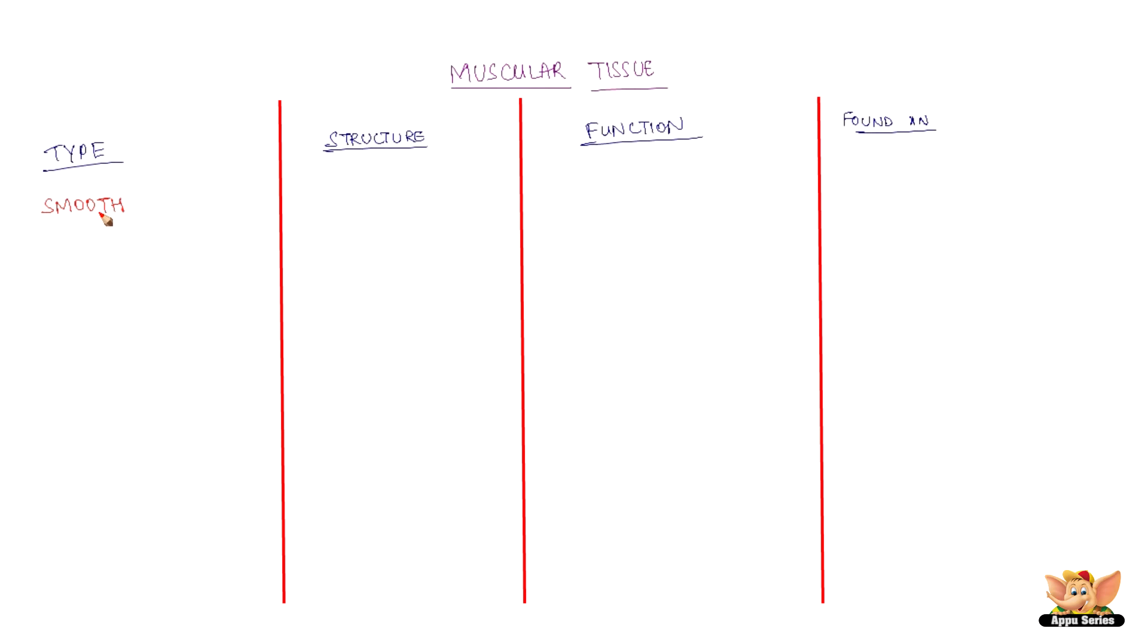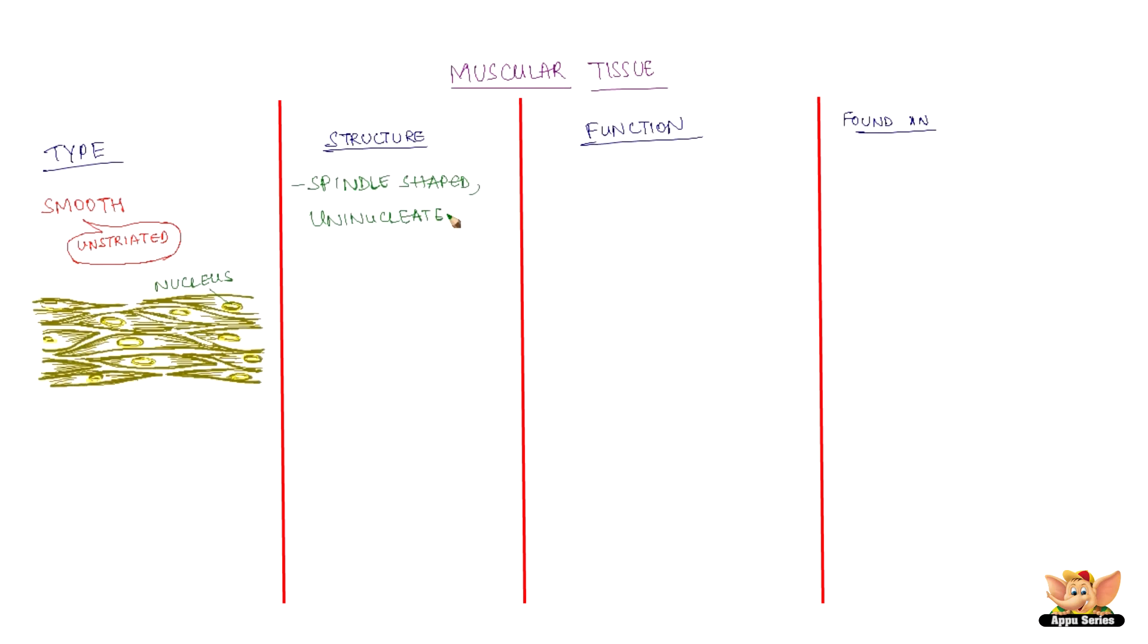Involuntary muscles are those which cannot be moved by conscious will. Smooth muscles are of this category. They are also called unstriated muscles. The cells are spindle shaped, that is long with pointed ends, and uninucleate meaning having one nucleus.